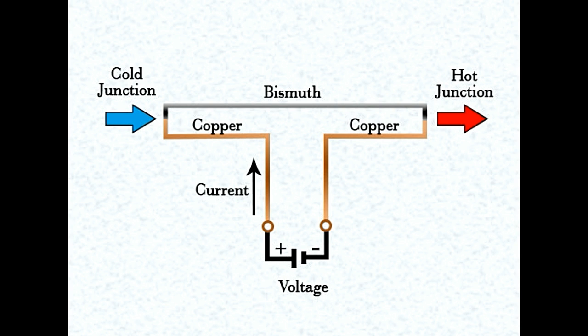While at the junction where current passes from bismuth to copper, the temperature drops.